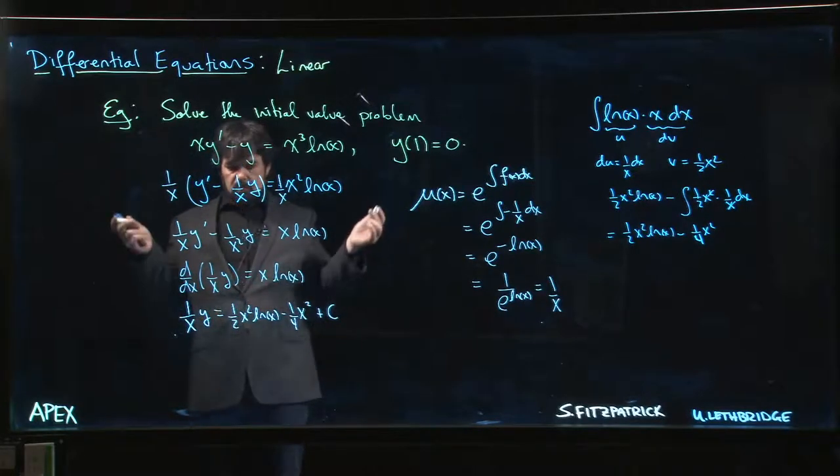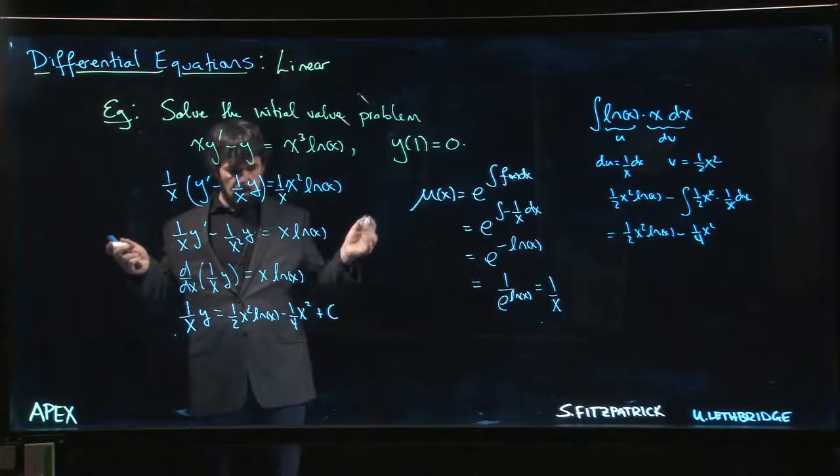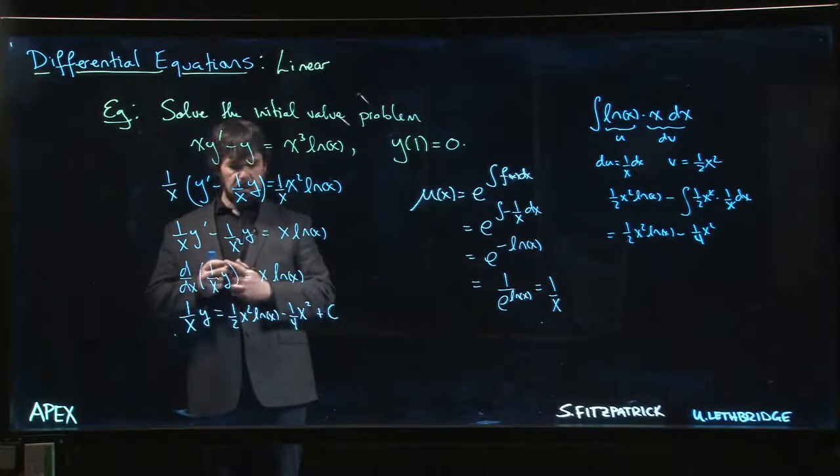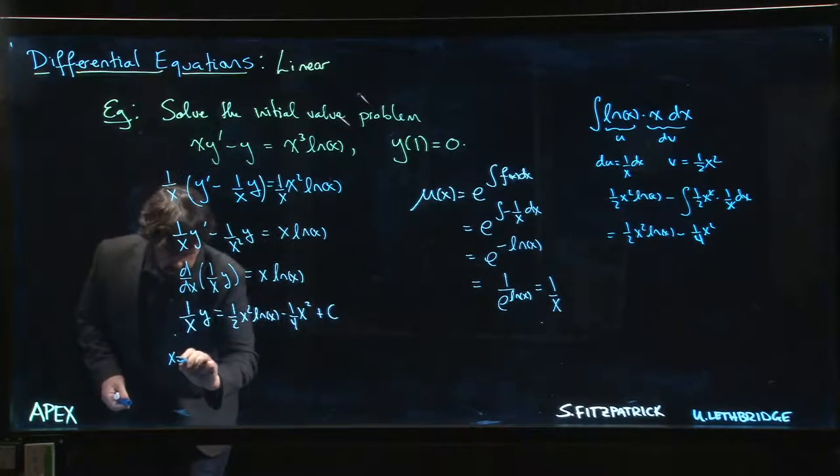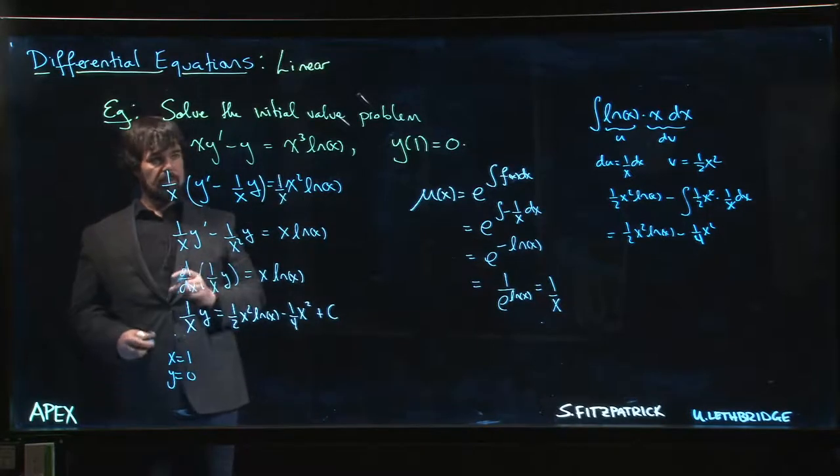We can put in that initial value now if we want. C is isolated, which makes life easier. If we put in x = 1, when x = 1, we're told that y = 0.